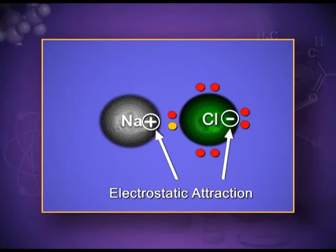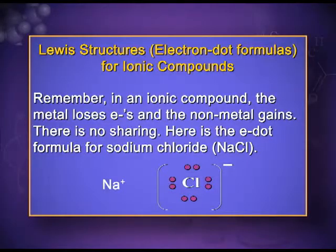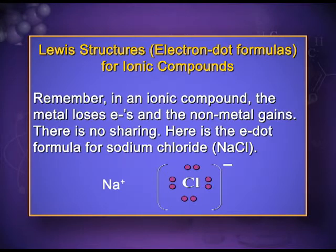Since they are now oppositely charged ions, electrostatic force will hold them together. In the electron dot structure, chlorine is surrounded by 8 dots, meaning 8 electrons around it, and you can see the negative charge on the chloride ion because it gained one electron from sodium. Sodium has one positive charge.